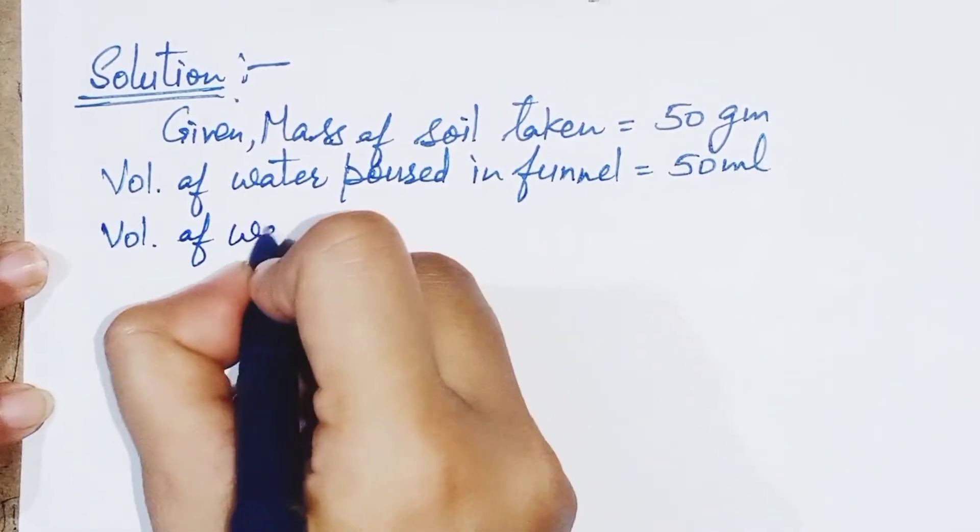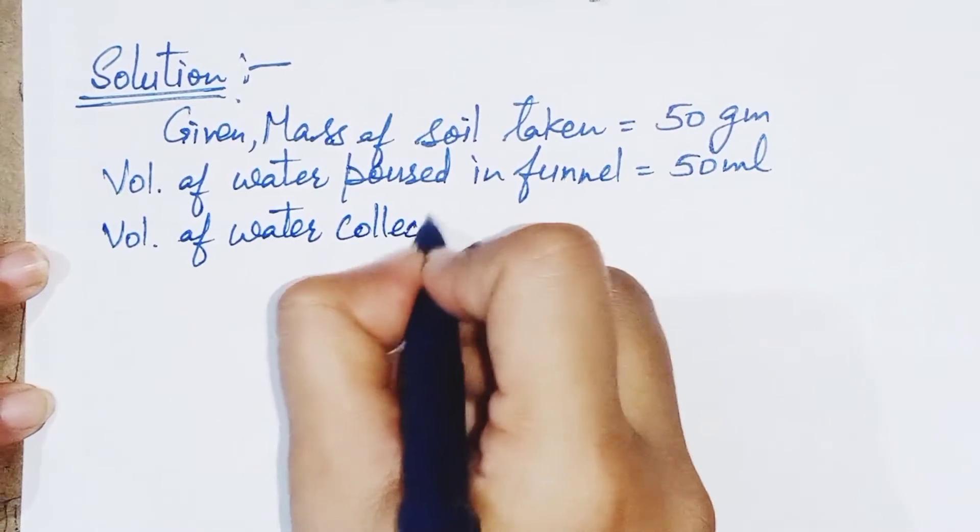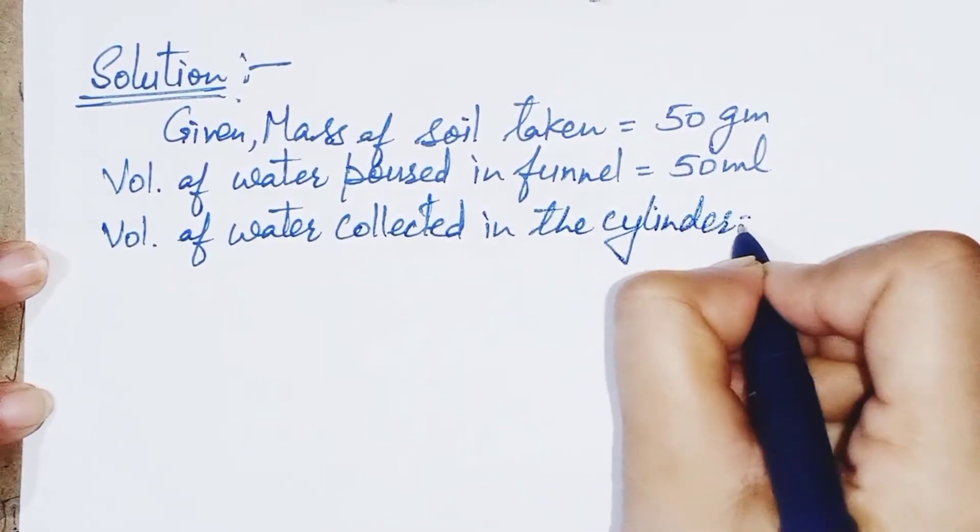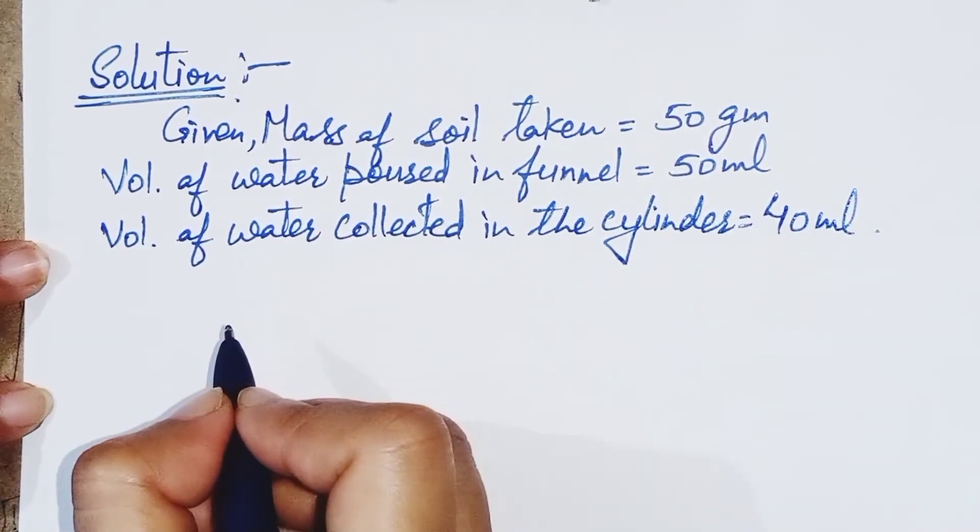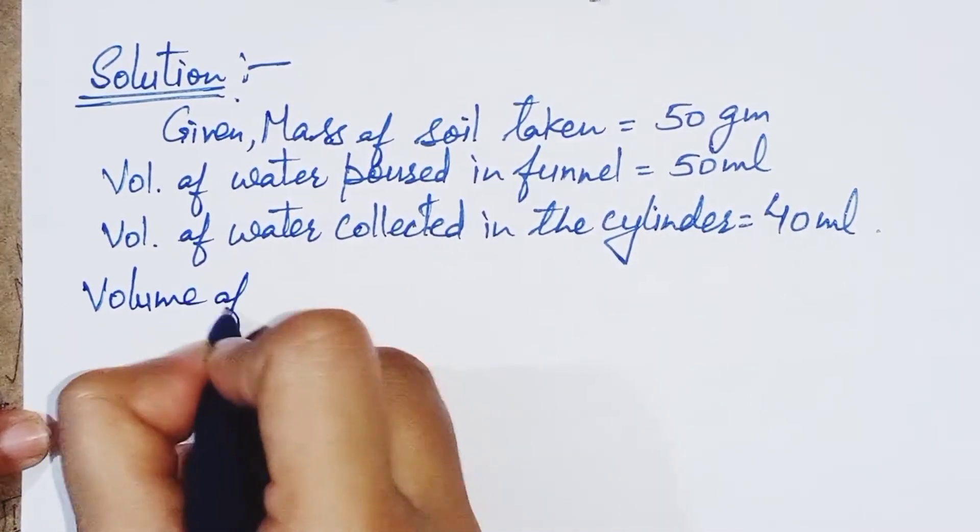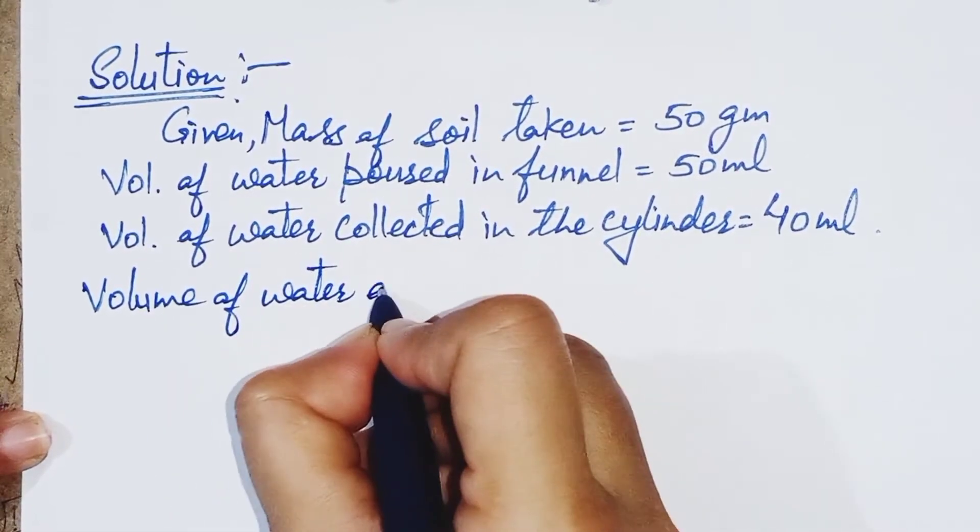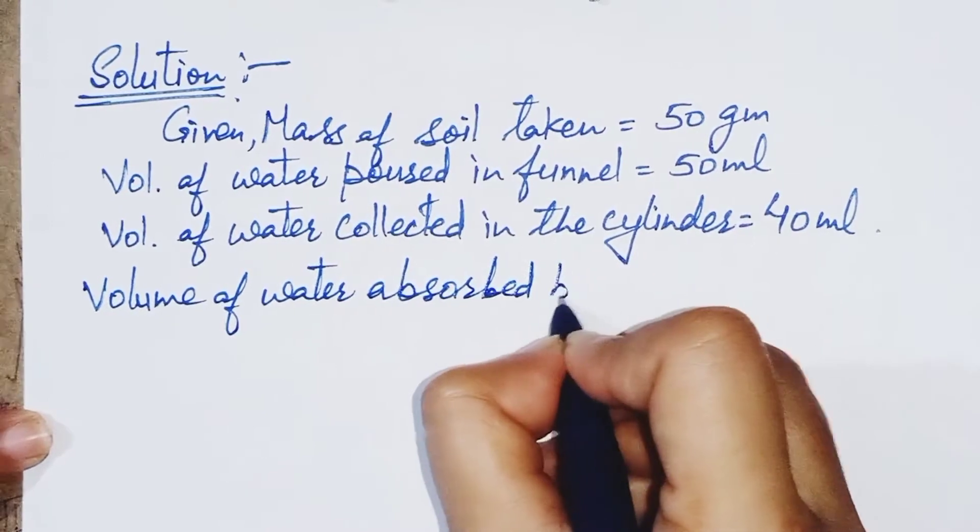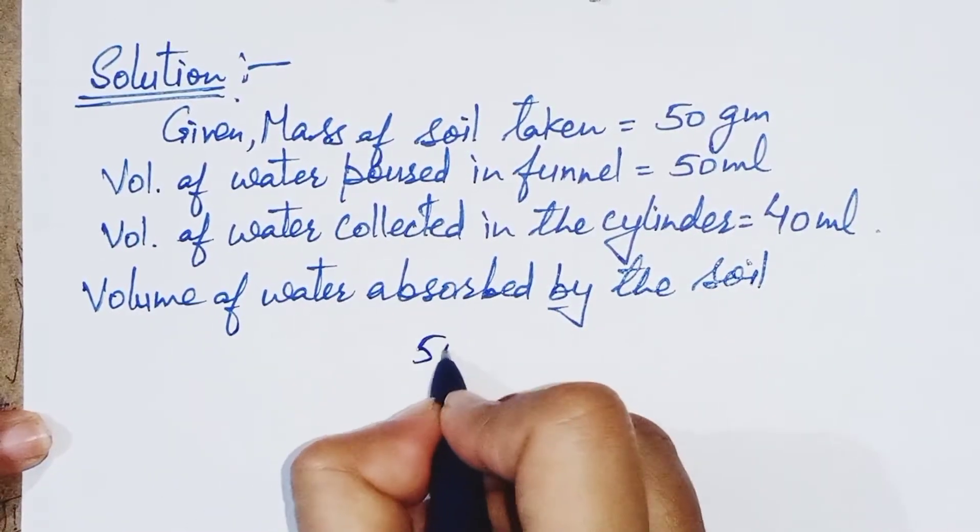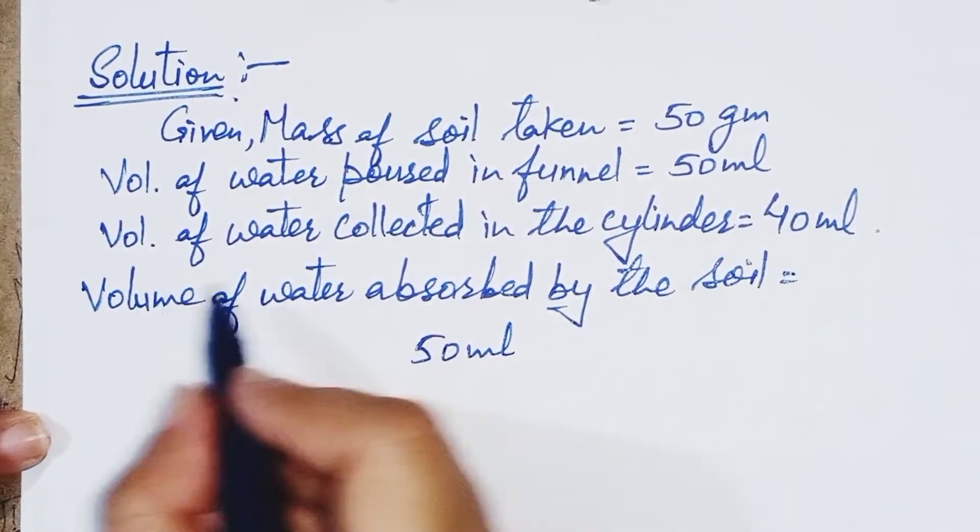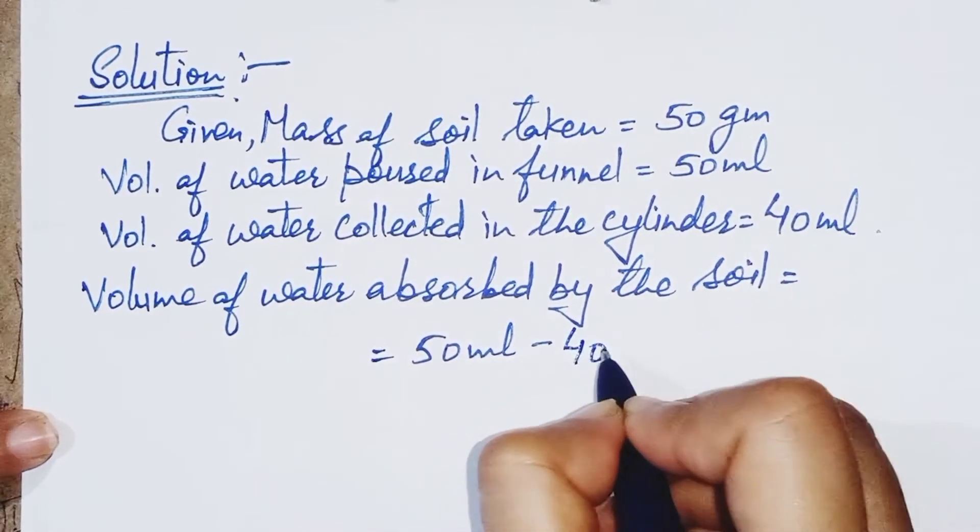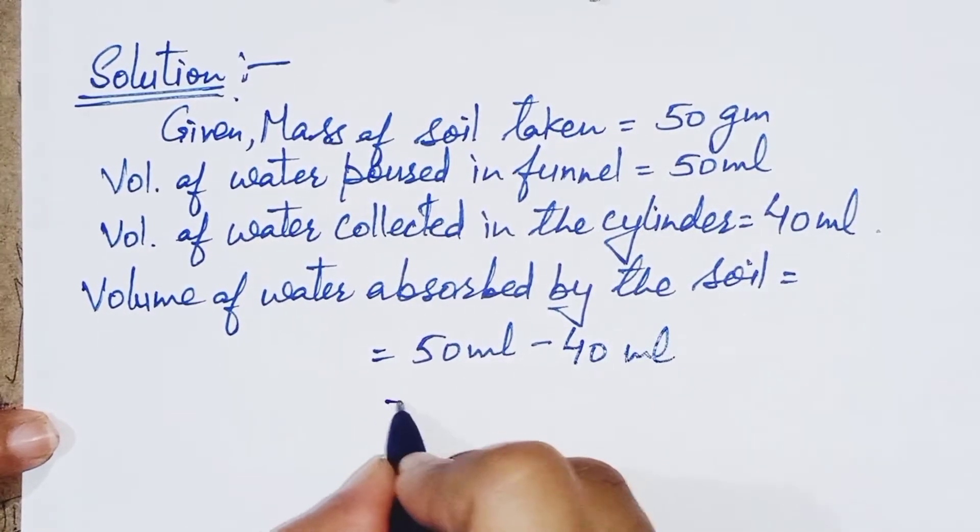Volume of water collected in the cylinder is equal to 40 ml. Now calculate volume of water absorbed by the soil. Volume of water poured in funnel is 50 ml and volume collected in cylinder is 40 ml. So by subtracting 40 from 50 we will get 10 ml.